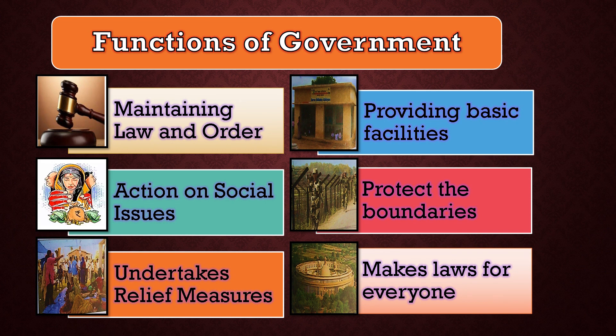The next important work is action on social issues. The government takes action on many social issues. We have observed in history how the government has, from time to time, taken action to remove and abolish social issues from society. For example, it makes several programs and implements them to help the poor, especially women — like various laws to prevent female foeticide — and many other rules and regulations to abolish social issues.